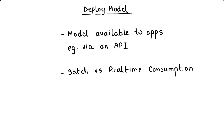For batch consumption, predictions can be scheduled — say every hour or every day — stored in a database, and consumed by other applications. The amount of data processed is typically larger than for real-time prediction. A use case for batch consumption might be an e-commerce site sending out a weekly email to customers about recommended products based on past purchases — since this is not a real-time need, the model can be scheduled to run ahead of time and predictions stored for the application to use.